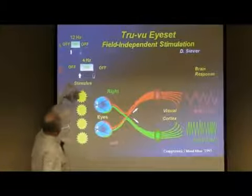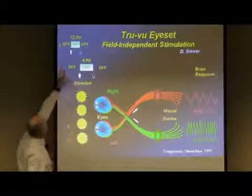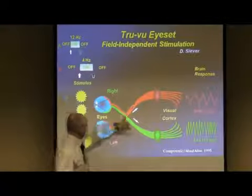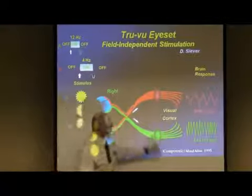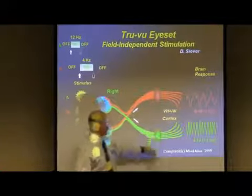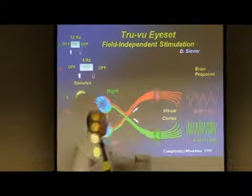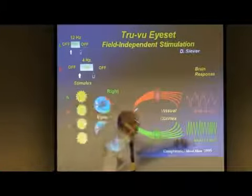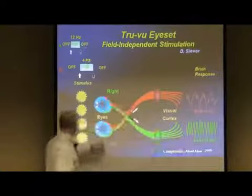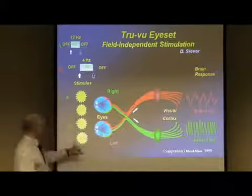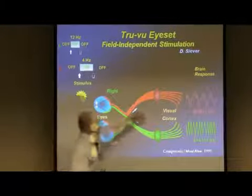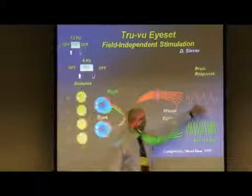So we've got stimulus A, which is a fast stimulus, running through, hitting the left retinas, zipping down to the left geniculate and thalamus, and generating itself on the left side. Here is an example of a slower frequency B going across to the right-hand side.